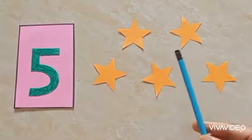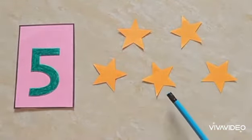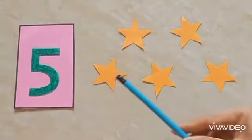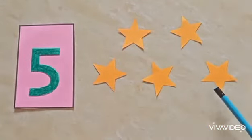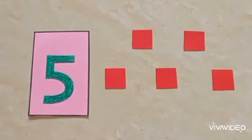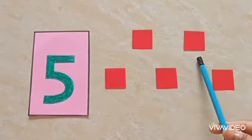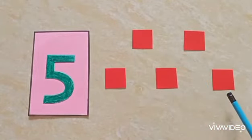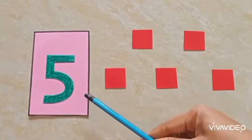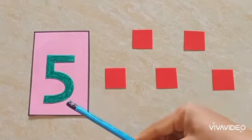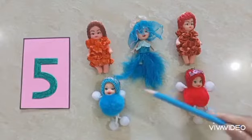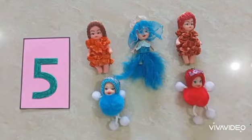Five stars! One, two, three, four, and five — five stars! Now we are going to count squares. One, two, three, four, and five — five squares! How many squares? Five squares!